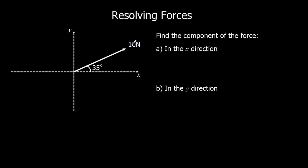So here we've got a force of 10 newtons acting at an angle of 35 degrees to the horizontal, to the x-axis. We're going to split that force up into one force going along the x-axis and one force going up the y-axis. This is a right angle triangle, so there's a right angle. We're going to say that the one force of 10 newtons is the same as these two forces together. So 10 is the hypotenuse, 35 is the angle, and we're going to work out what these two forces are.